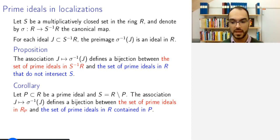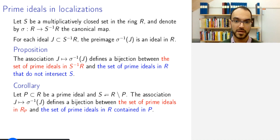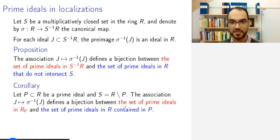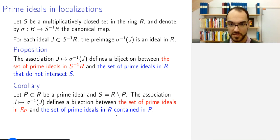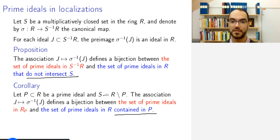As a corollary, if the localization is with respect to a prime ideal P — so S consists of those elements that do not belong to P — then we have a bijection between the set of prime ideals in the localization and the set of prime ideals contained in P. This is because being contained in P means they do not intersect the complement of P, so it follows immediately from the previous proposition.